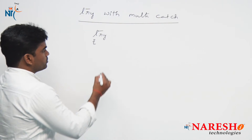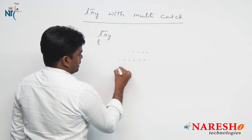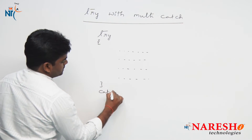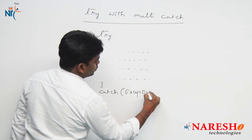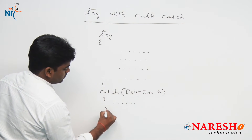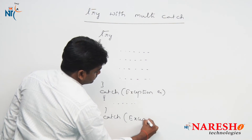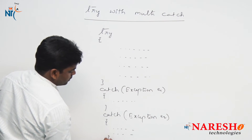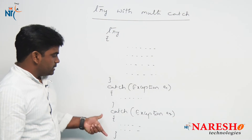One try block can have N number of catch blocks because we need to handle different types of exceptions occurring in different types of statements. We have one try block, a catch block for Exception 1 with its handling logic, and another catch block for Exception 2 with its handling logic.